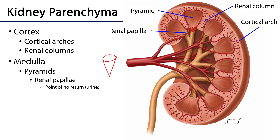The cortex surrounding the medulla is organized into two regions. Cortical arches are the regions of cortex superficial to the medulla. Renal columns are the spaces between the cortical arches and the pyramids — essentially the cortex found between adjacent pyramids. Nephrons, which are the functional units of the kidney, are situated in both the cortex and the medulla.